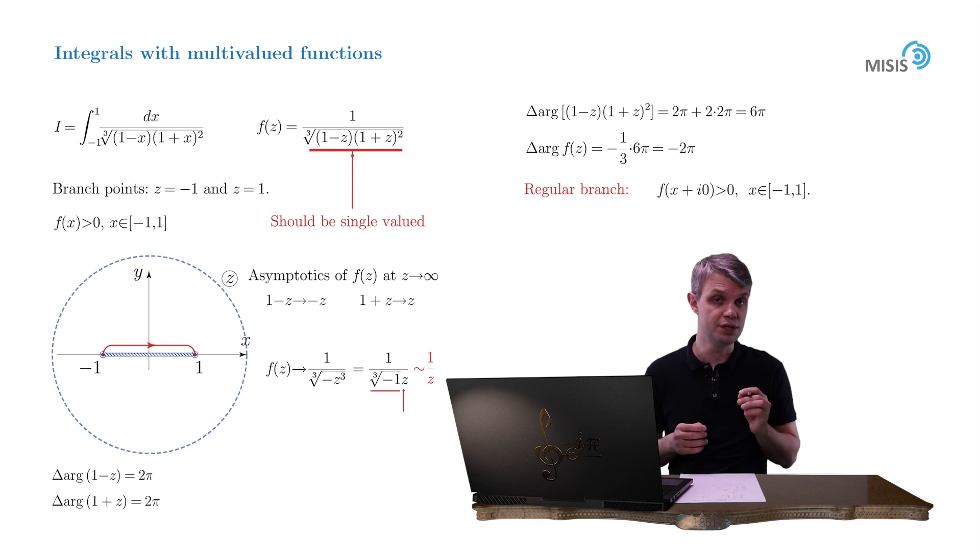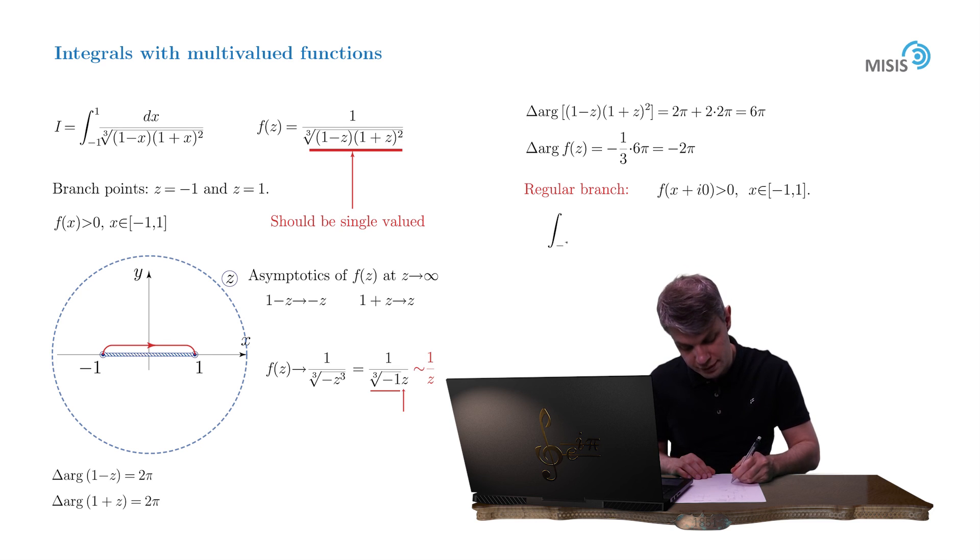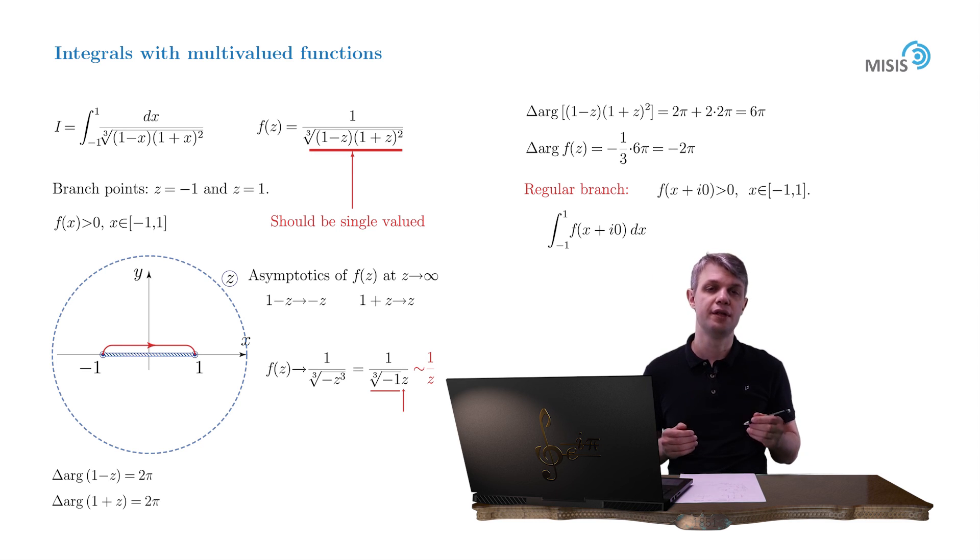Thus, we rewrite our initial integral as a new contour run from negative 1 to 1, f(x+i0)dx. And here is the endpoint of our slide. We started with a real-valued integral and transformed it into a contour integral with correctly defined multivalued function.